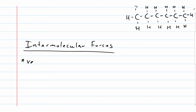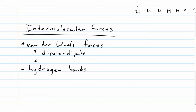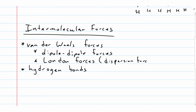Intermolecular forces are broken down into two main categories: van der Waals forces, and hydrogen bonding. Van der Waals forces consist of two subtypes — dipole-dipole forces and London forces. London forces are not named after the city of London, but after the person given credit for first describing them. Sometimes London forces are also called dispersion forces.